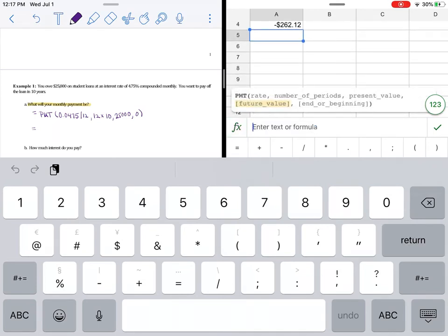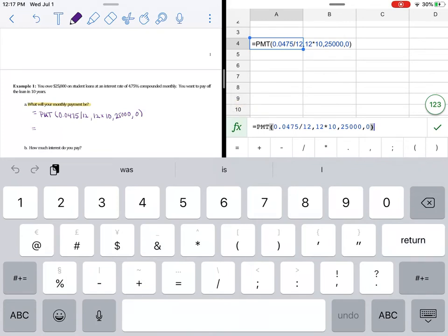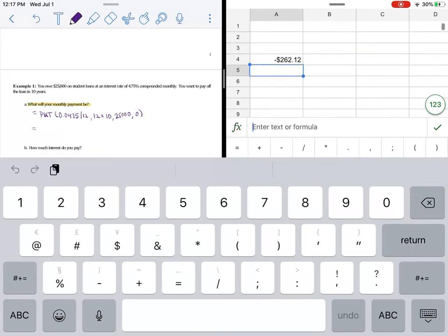Then it's 25,000, and then remember we want to get it down to zero. So this is pretty great. It tells us, well let me get out of there again, that our monthly payment will be $262.12.